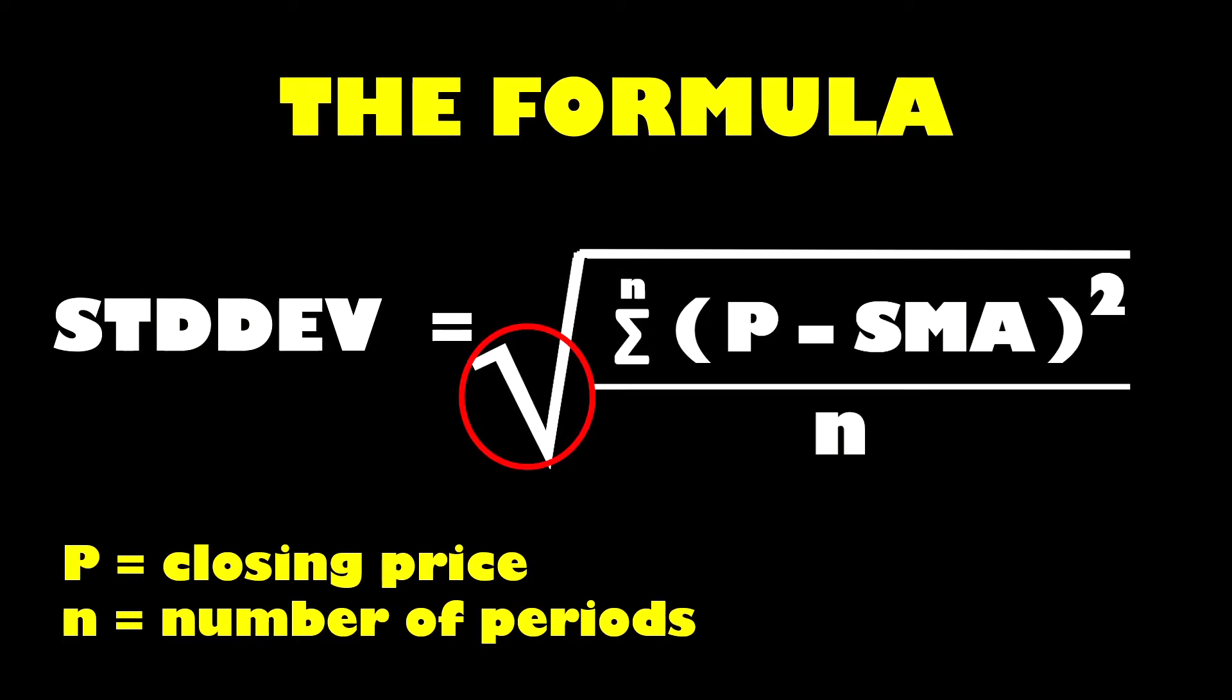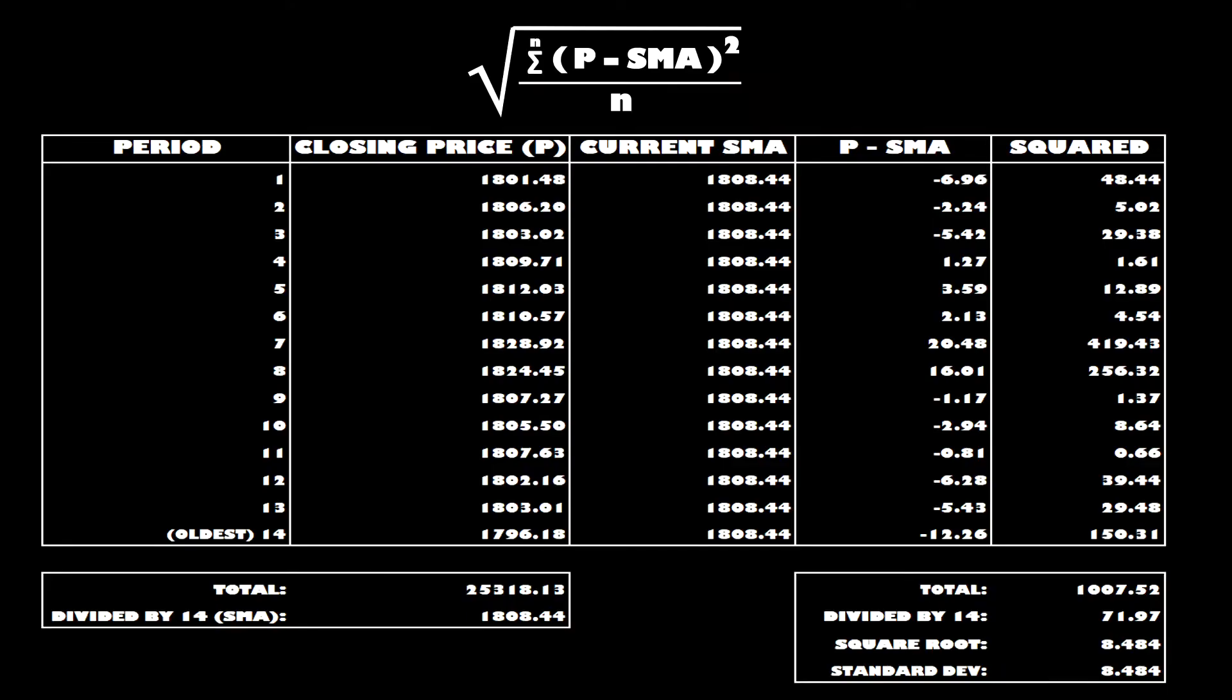It's not the easiest to grasp so it might be better if I explain it through a table. In our example here we are using a set of daily gold prices.